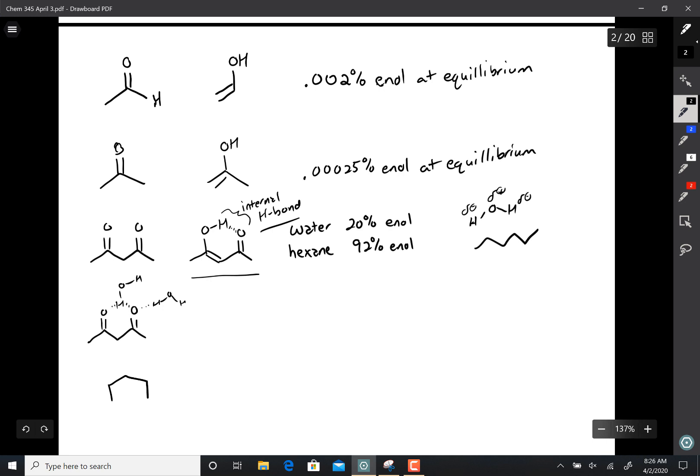Now there are some compounds out there, like say this cyclic compound right here, that exists 100% in the enol form. And that's mainly because the enol form of this compound has benzene resonance. But for the most part, enols are unstable and they should be considered as mechanistic intermediates and not necessarily starting materials.